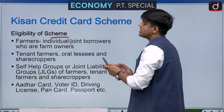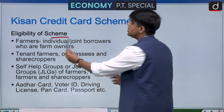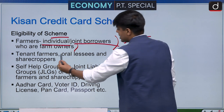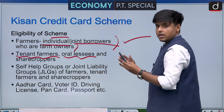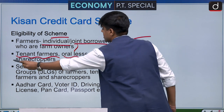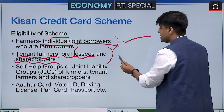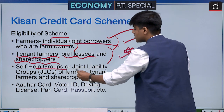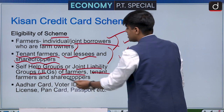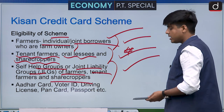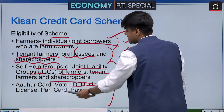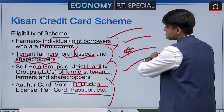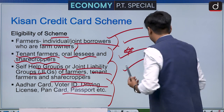Eligible beneficiaries for the Kisan Credit Card scheme include: individual farmers or joint borrowers who are farm owners; tenant farmers, oral lessees, or share croppers; and self-help groups or joint liability groups of farmers including tenant farmers and share croppers. Documents needed include Aadhaar card, voter ID, driving license, PAN card, and passport. The scheme covers not only land-owning farmers but also tenant farmers and share croppers.